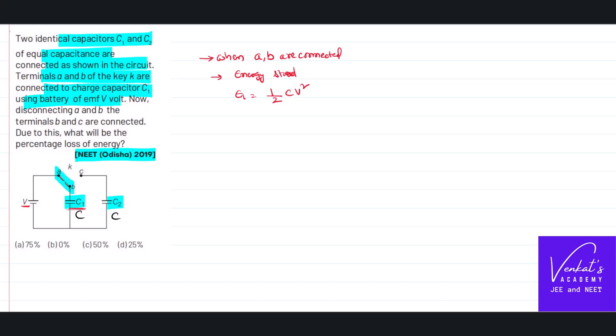And V is the voltage that is available when A and B are connected. Now let us go to the next part when B and C are connected.